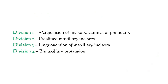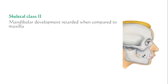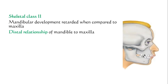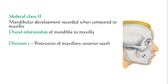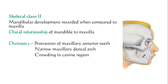Skeletal Class I malocclusion has four divisions. Division I involves malposition of incisors, canines, or premolars. Division II involves proclined maxillary incisors. Division III involves linguoversion of maxillary incisors. Division IV involves bimaxillary protrusion. In skeletal Class II malocclusion, mandibular development is retarded compared to the maxilla, or alternatively maxillary development is in excess compared to the mandible, resulting in a distal relationship of mandible to maxilla.